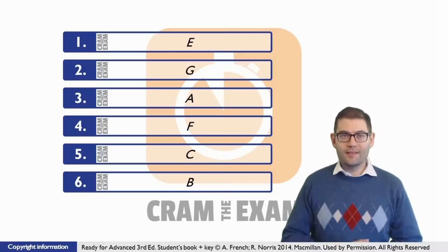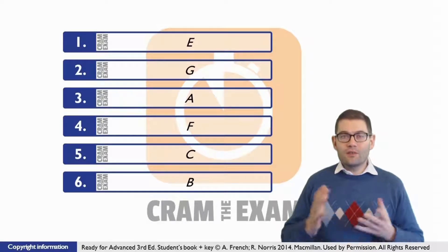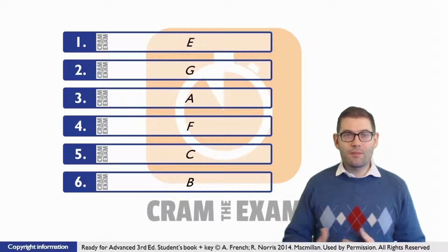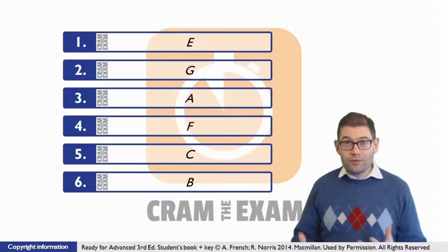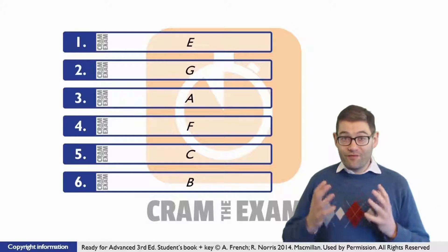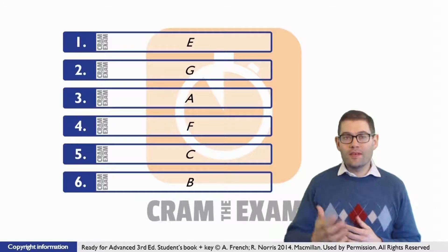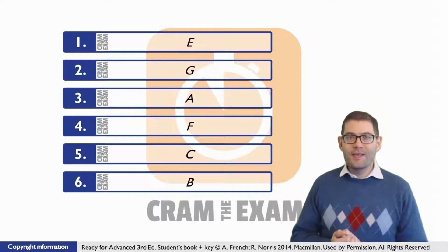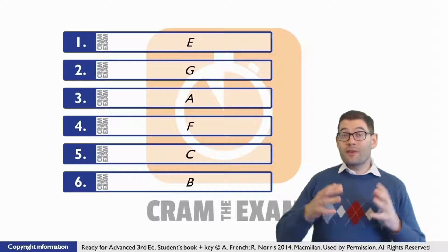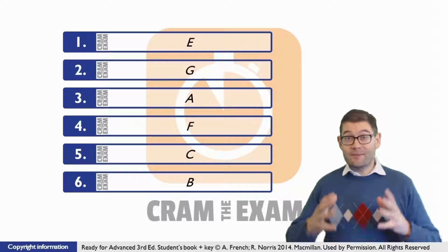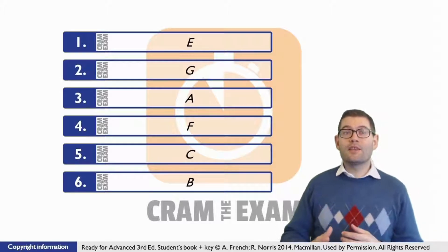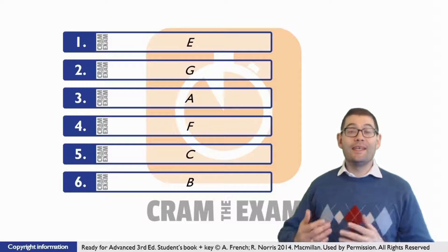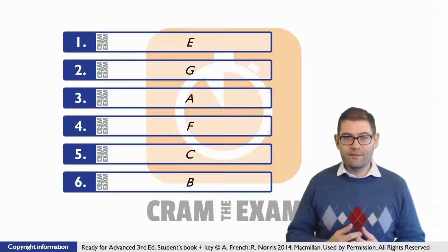For question one, the answer is E. Contextually, E provides Stephen's opinion which is in contrast to the opinion presented by his friend who accompanied him to the performance. There is also a vocabulary link as Marla is mentioned both in the main text before the gap and in E itself.